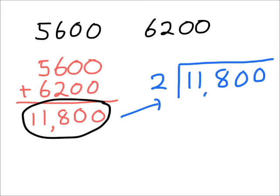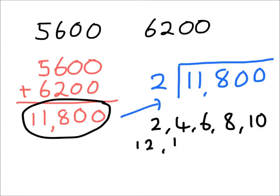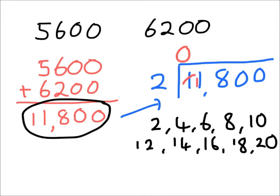Look at the first digits. How many twos are in one? Let's prove it — let's write out the two times tables: two, four, six, eight, ten, twelve, fourteen, sixteen, eighteen, twenty. How many twos are in one? The answer is zero. But I've still got that one left, so I carry it forward into the next column.